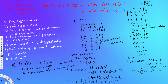To determine if A is diagonalizable, we check if the algebraic and geometric multiplicities are equal for each eigenvalue. For lambda equals two: algebraic multiplicity two equals geometric multiplicity two. For lambda equals one: algebraic multiplicity one equals geometric multiplicity one. Both conditions are satisfied, so A is diagonalizable. If even one eigenvalue failed this condition, A would not be diagonalizable.